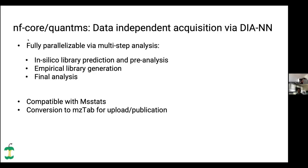For the third branch based on DIANN — the data-independent acquisition branch — we made it fully parallelizable via a multi-step analysis. First you do an in silico library prediction and pre-analysis for every sample, and then only after do you perform an empirical data-based library generation and a final analysis on the full experiment. It is also compatible with MS-Stats, meaning the output will be comparable in format, if not in quantities, compared to other branches of the workflow.